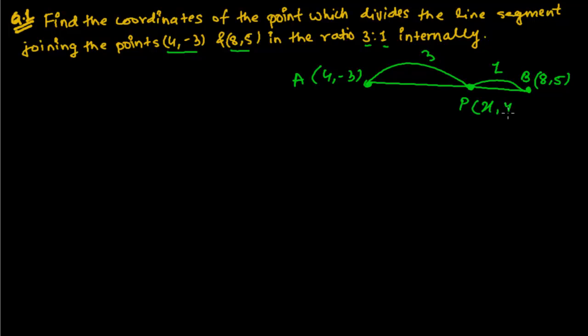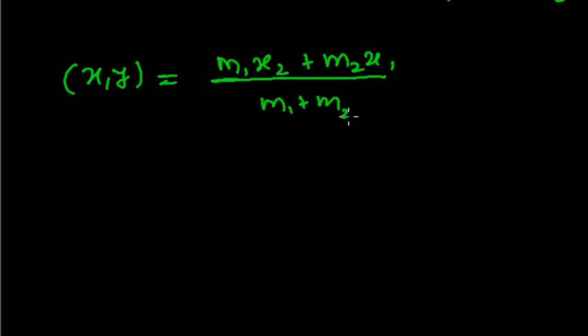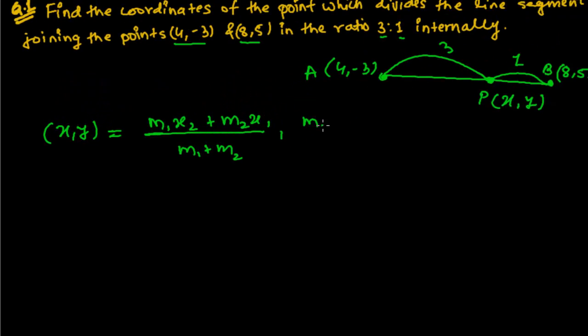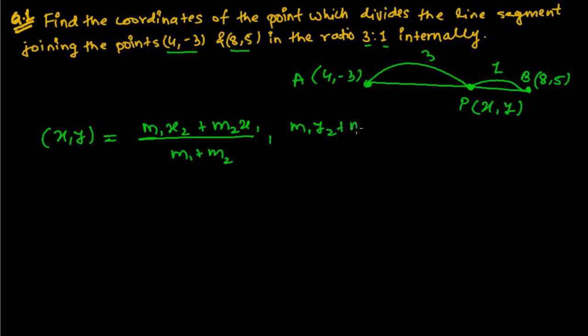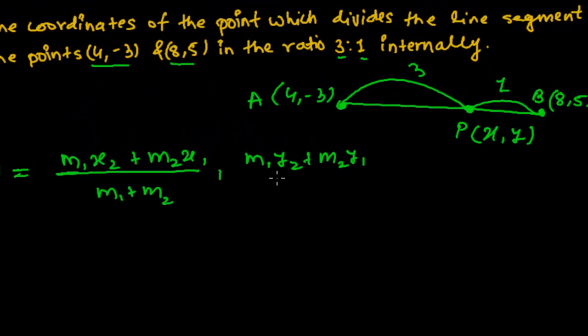Let me suppose this is (x, y). We know the section formula. Let me write the section formula first: (x, y) equals (M1·X2 + M2·X1) / (M1 + M2), (M1·Y2 + M2·Y1) / (M1 + M2).